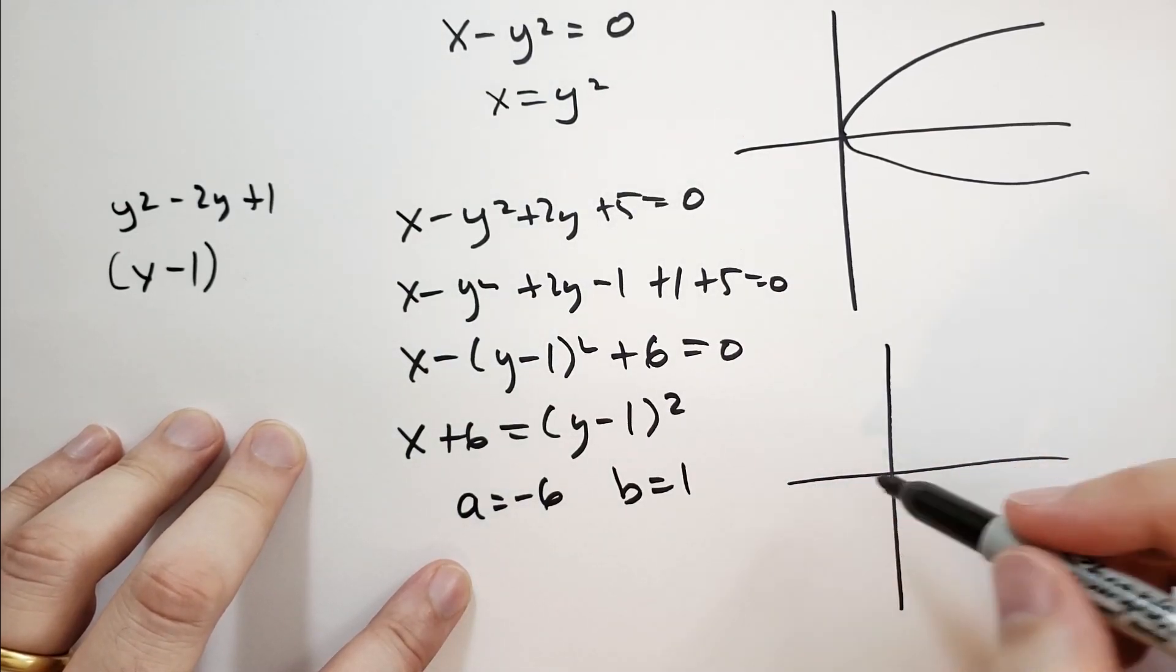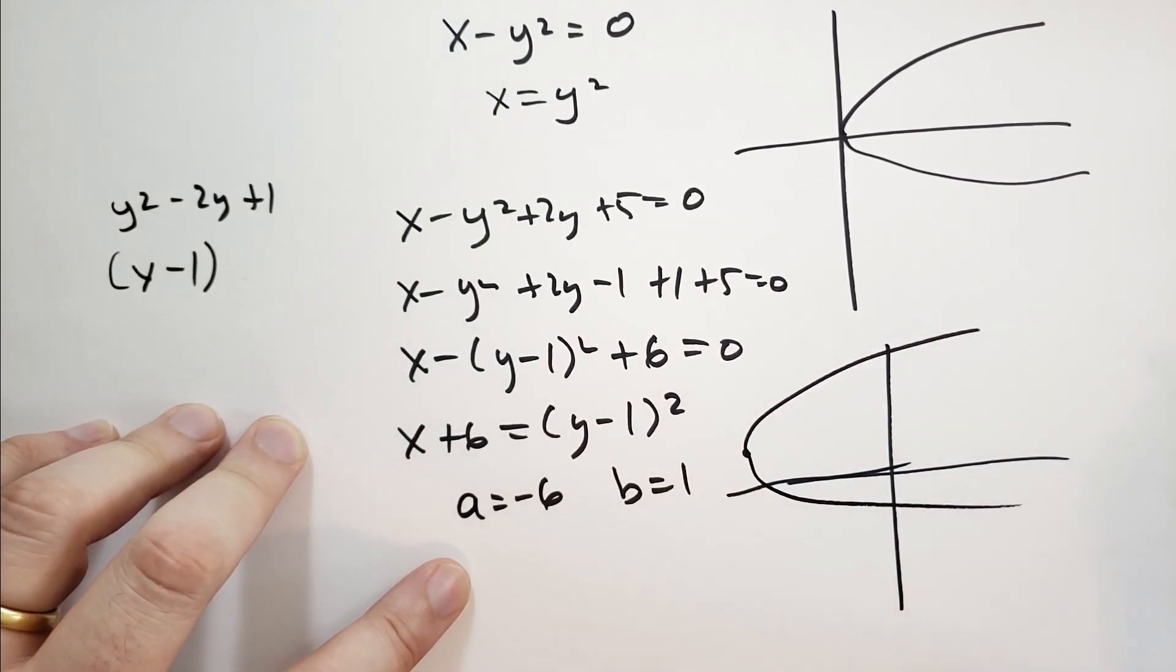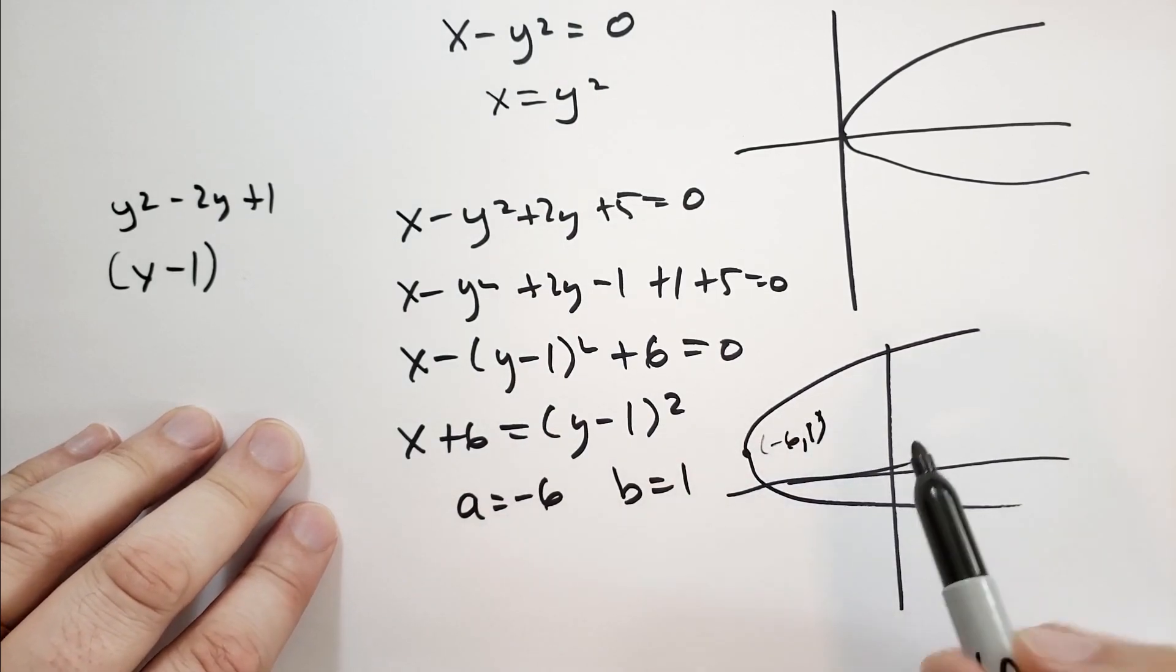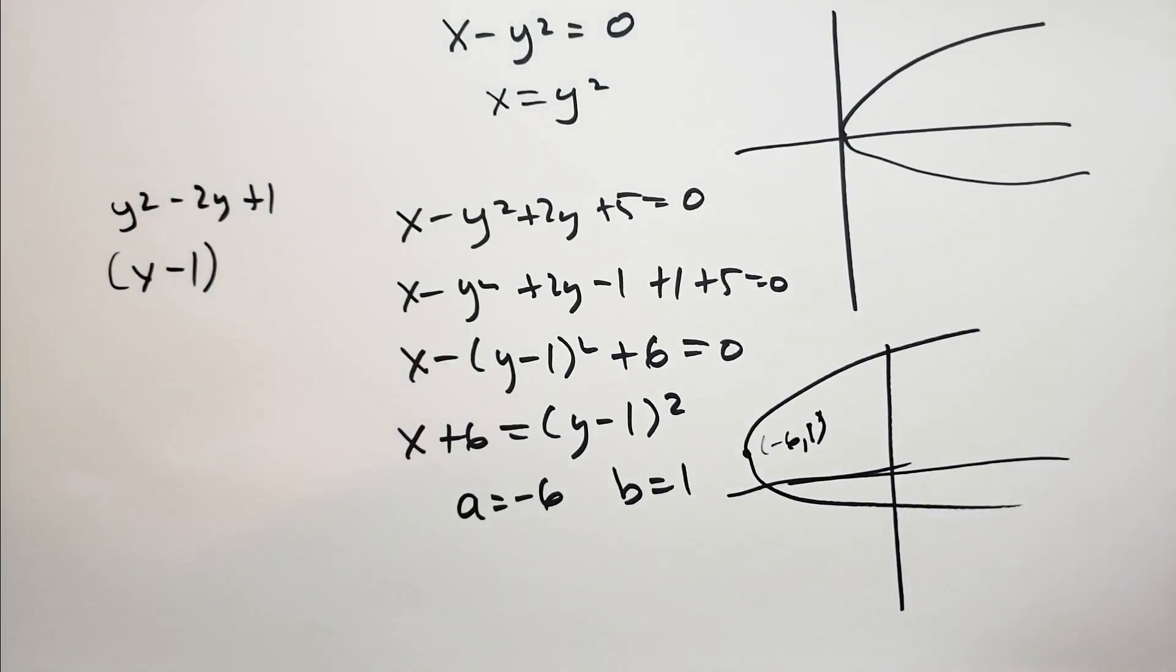So we have a equals minus 6 and b equals 1. The new graph is going to be at minus 6 comma 1. That's the new center, and the graph is just going to be as normal. Pretty simple stuff. There's really not much else to say.